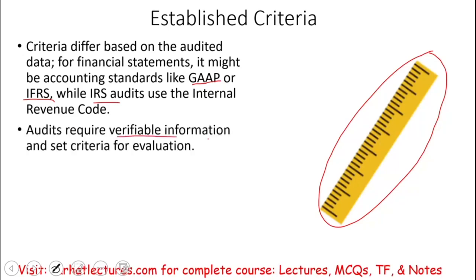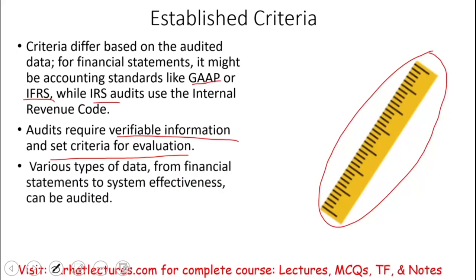An audit requires verifiable information and a set of criteria for evaluation. The evidence you select has to be verifiable and measured against some criteria. We're going to have various types of data that we can audit — from financial statements to system effectiveness and so forth. We can audit practically anything, and anything will have some sort of a standard. In an undergraduate auditing course, you're going to be auditing financial statements, and in the U.S. your criteria will be generally accepted accounting principles.